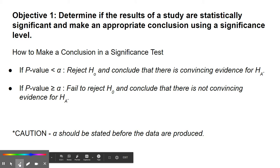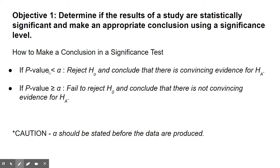How do we make a conclusion? We did this in the last section but we used large or small. Now we're going to use alpha. If your p-value is less than alpha, this is when you reject the null because you have found convincing evidence for the alternative. This alternative situation we think could be true — it happened, but it doesn't happen often by chance. It's rare. It means something.